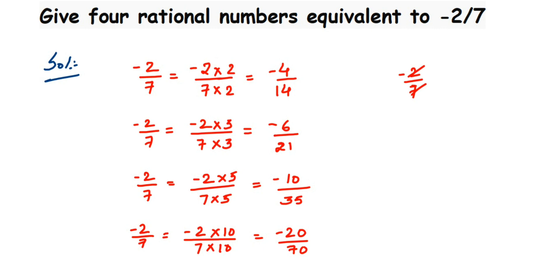Suppose I have a number like 6 by 8. 6 by 8 I can divide with 2 because 6 and 8 both go in 2 tables. So here I could divide with 2. So this will be equal to 3 by 4. So 3 by 4 will be the equivalent rational number of 6 by 8.